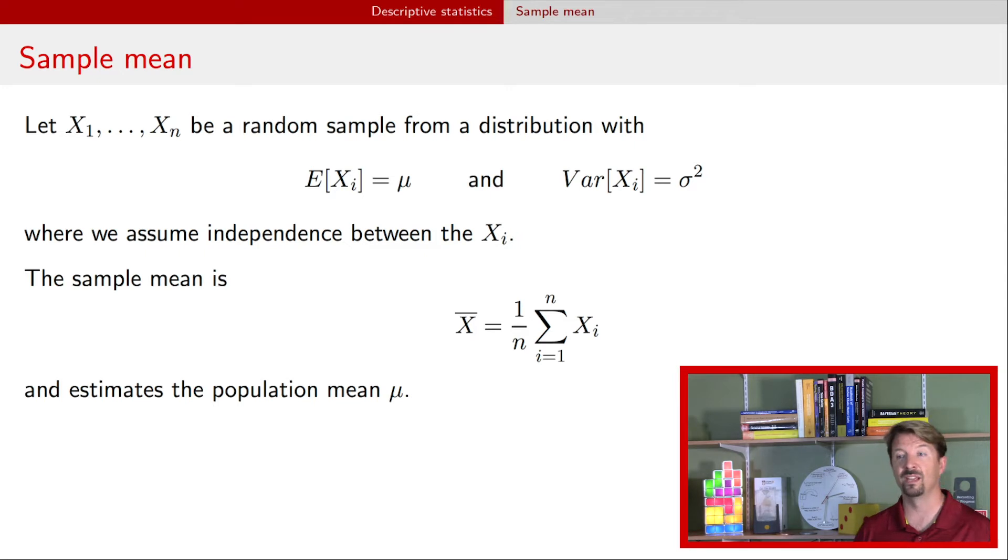And when we use this sample mean as an estimator of that population mean, sometimes we write it in a different way. And that is we write mu hat. Okay, so anytime you see that hat or that carat symbol above a Greek letter in particular, then that quantity is the estimator of that population parameter. All right, so that was the sample mean.